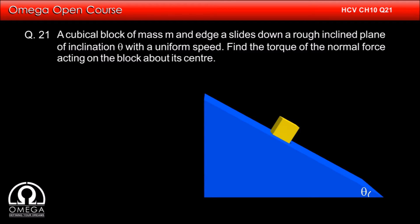A cubical block of mass M and edge A slides down a rough inclined plane of inclination theta with a uniform speed. Find the torque of the normal force acting on the block about its center.